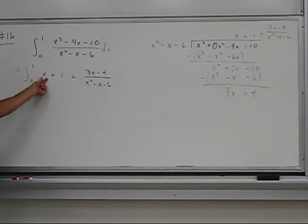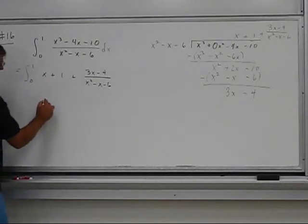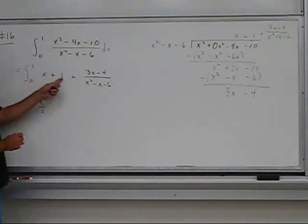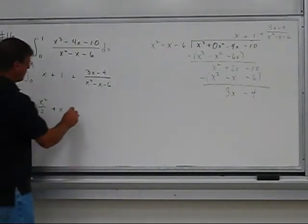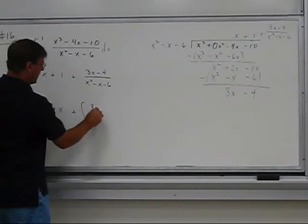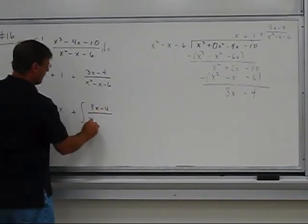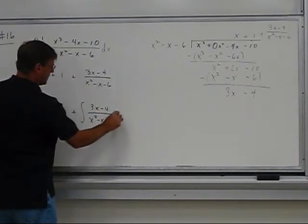We can integrate this x immediately to get x squared over 2, we can immediately integrate the 1, which gives me x, and then that leaves me still the integral of 3x minus 4 over x squared minus x minus 6.